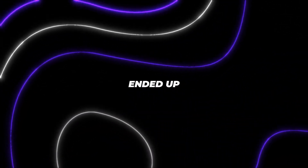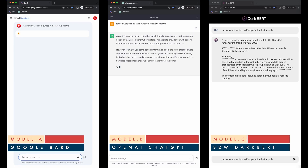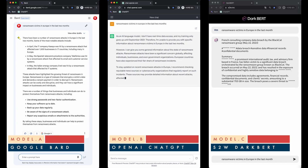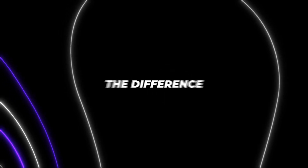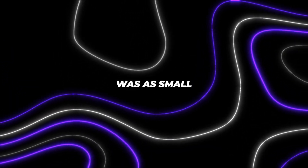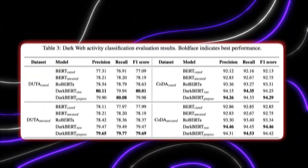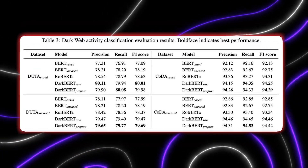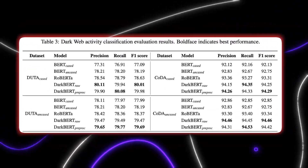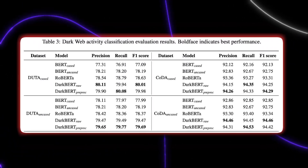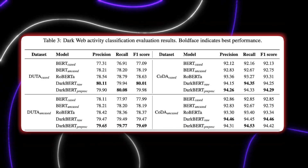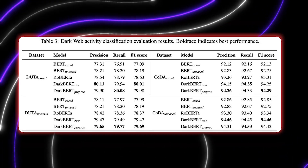DarkBert ended up outperforming other models when it came to interpreting or monitoring data from the dark web. The difference was as small as a few percent at times, but certain tests yielded an increase in F1 score of about 25 percent or more over other models.